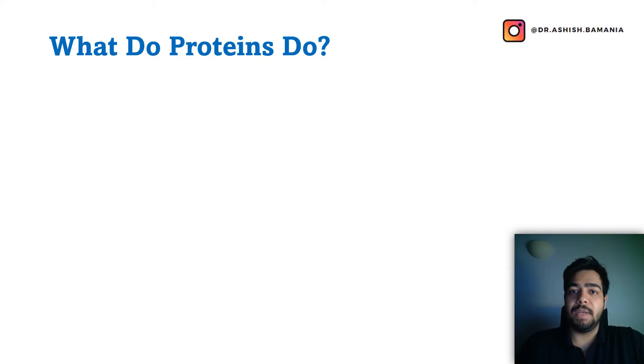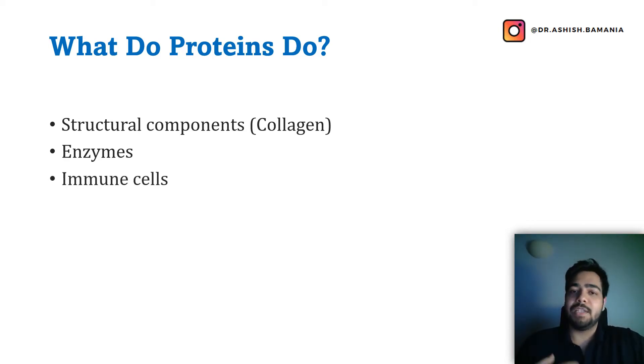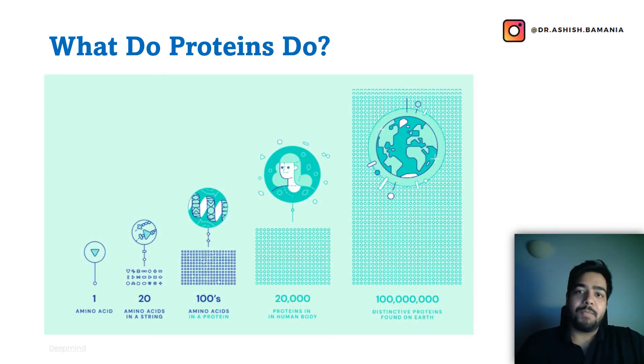Now, what do proteins do in our body? Proteins form structural components, for example collagen, which is one of the very important structural proteins in our body. They act as enzymes and catalyze different important chemical reactions. They are important parts of immune cells and help fight infection. Proteins can function as hormones in our bodies, such as oxytocin and growth hormone. There are 20,000 different proteins in the human body, and they perform very important functions. Proteins are very abundant in the whole animal kingdom, plant kingdom, and in different living organisms.